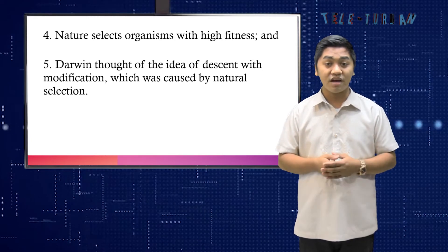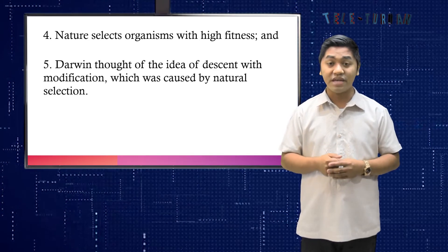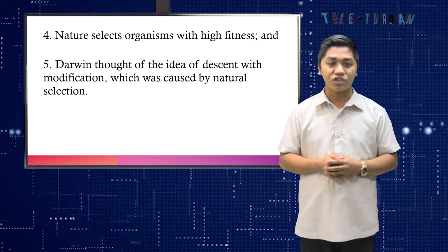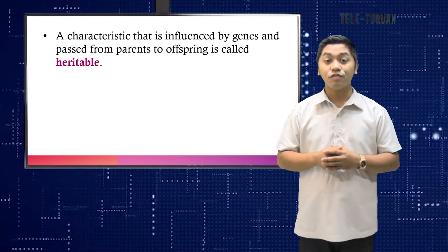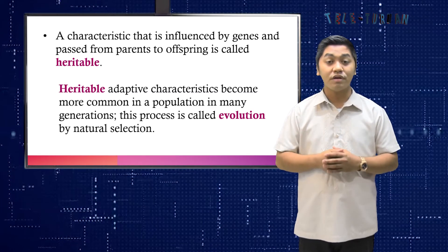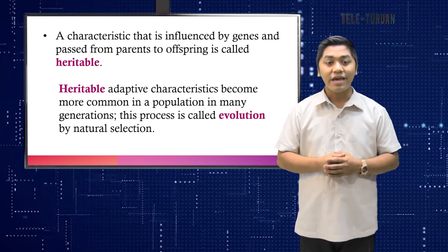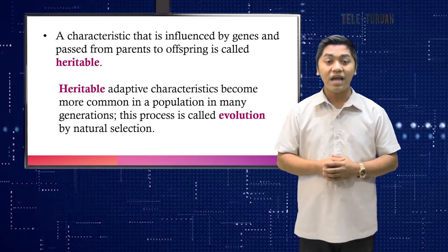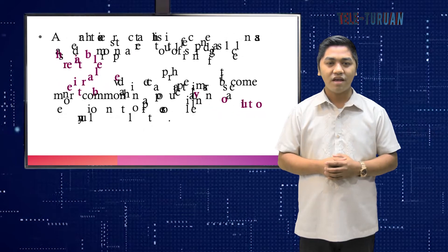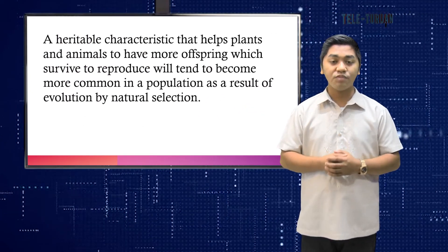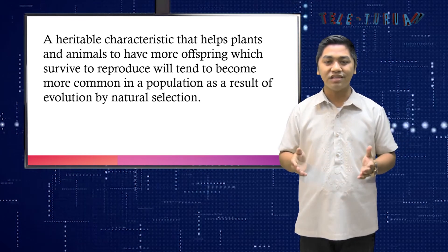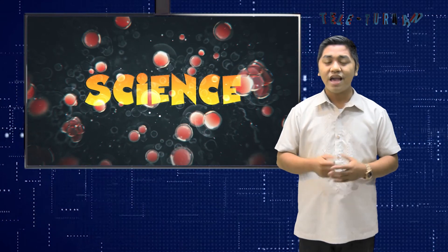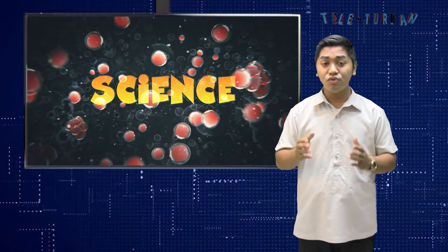And fifth, Darwin thought of the idea of descent with modification, which was caused by natural selection. Though at this time, he was not quite confident of his idea until Alfred Wallace sent him his manuscript containing Wallace's hypothesis of natural selection, identical to Darwin's. A characteristic that is influenced by genes and passed from parents to offspring is called heritable. Heritable adaptive characteristics become more common in a population over many generations — this process is called evolution by natural selection. Evolution is an important biological process; it is how living things change over time and how new species develop.